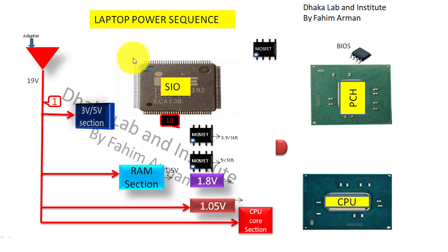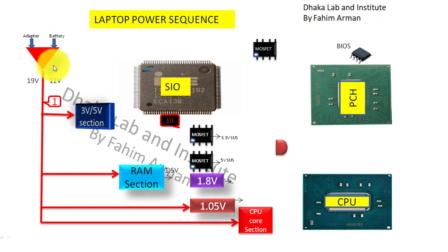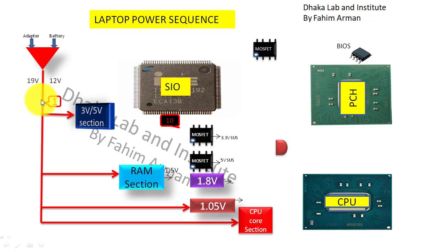The process starts when we plug in the adapter. First there will be 19 volts from the adapter. If we don't plug in the adapter, then if we have a battery, the battery voltage will pass to the whole motherboard. Today I will discuss with adapter voltage — 19 volts. Suppose there is an adapter connected to the laptop and 19 volts will pass first.